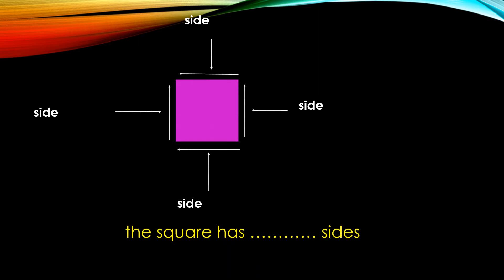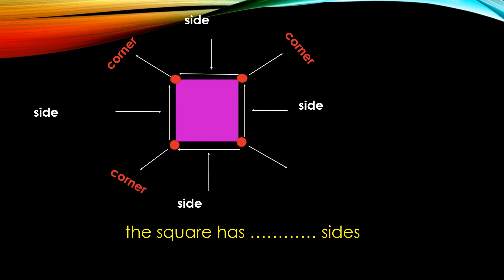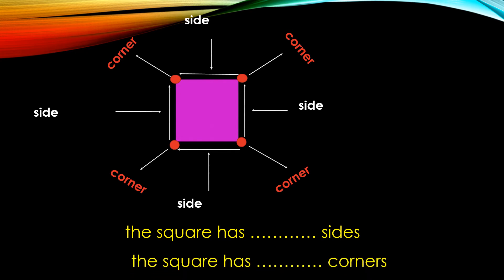Okay, let's see — what's this? It's a corner. So I have side and corner. This is corner, this is corner, this is corner, and this is corner. Let's count the corners: one, two, three, four. So the square has four corners.